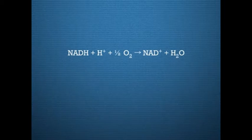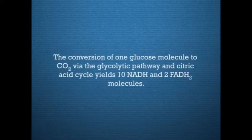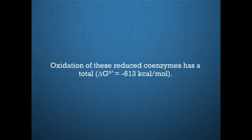NADH + H⁺ + ½O₂ gives NAD⁺ + H₂O. FADH2 + ½O₂ gives FAD + H₂O. The conversion of one glucose molecule to carbon dioxide via the glycolytic pathway and citric acid cycle yields 10 NADH and 2 FADH2 molecules. Oxidation of these reduced coenzymes has a total standard free energy change of minus 613 kilocalories per mole, so about 90% of the potential free energy in the chemical bonds of glucose is conserved in the reduced coenzymes.